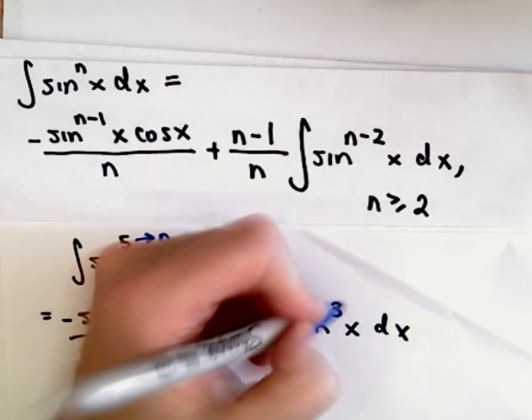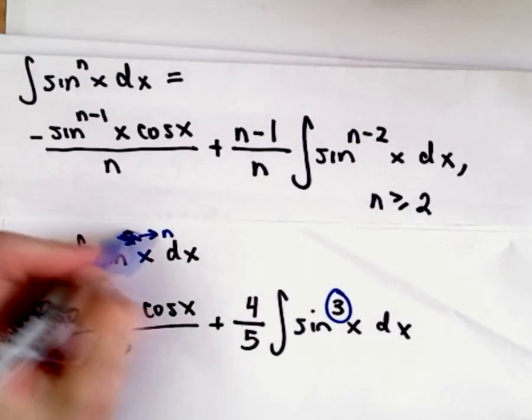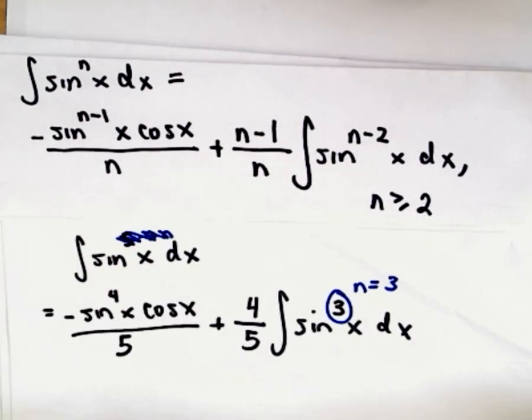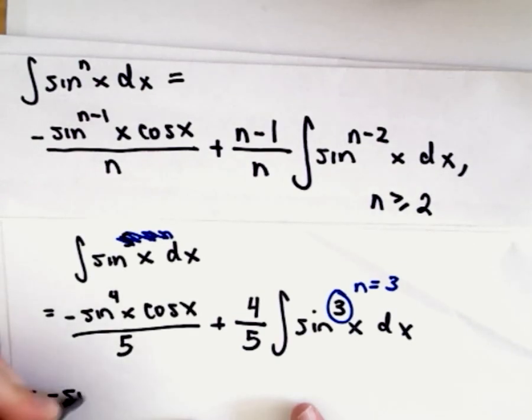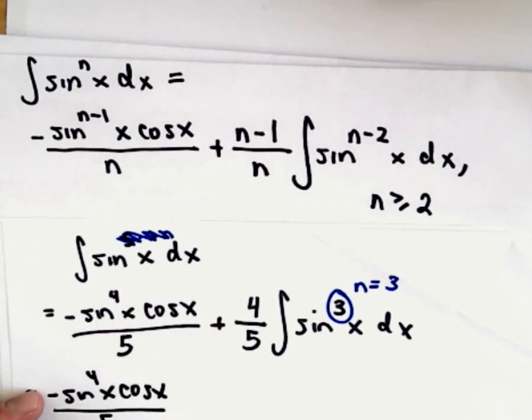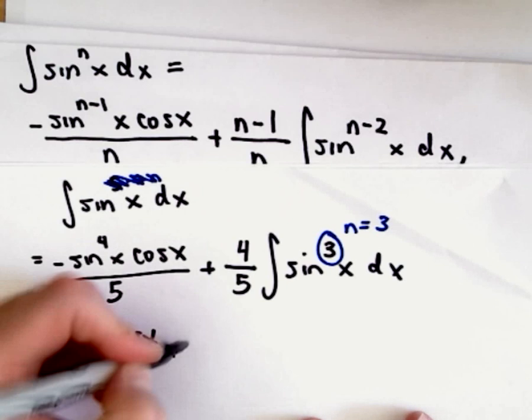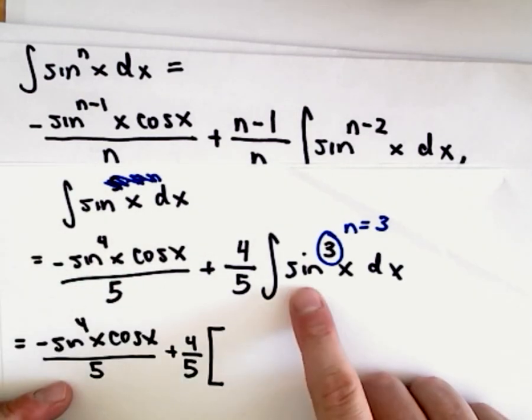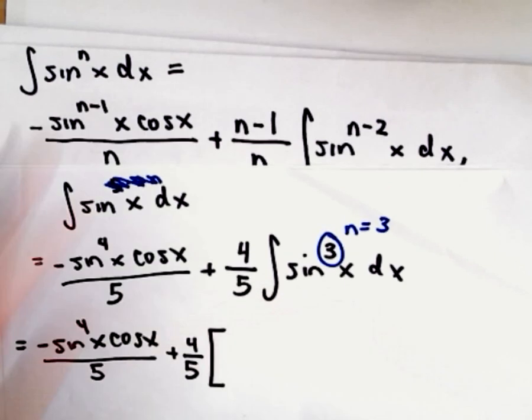Well, we're going to use the formula again, but in this case our value of n is now going to be equal to 3. So this first term, the negative sine to the 4th power of x times cosine x over 5, that's still there. We've got plus 4 fifths, and now again we're integrating sine cubed of x using our formula.